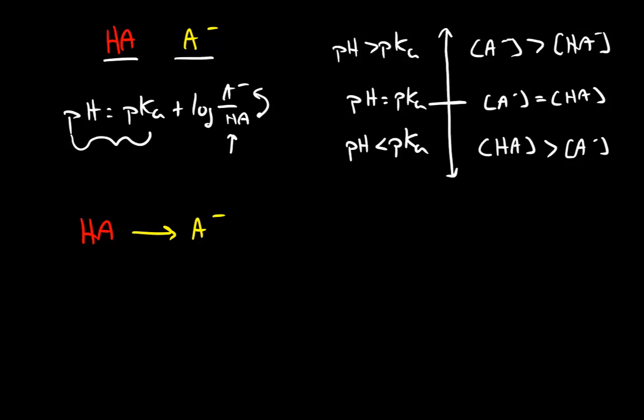At any given condition, or for our purposes, any given pH, we can think about the amount of the acid form of our buffer and the amount of the base form of our buffer. This is known as speciation. As we're going to see, as we move through the class, this idea becomes really important in thinking about the reactivity of biomolecules.